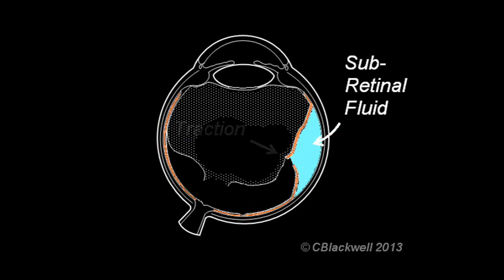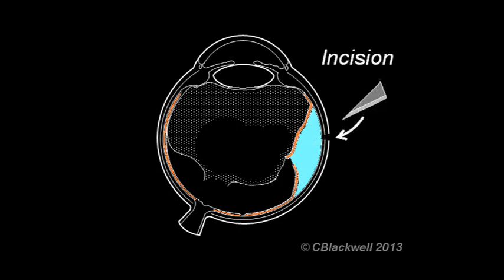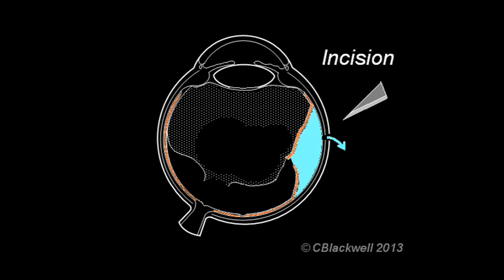Step one is to get rid of the subretinal fluid. Approaching from the outside of the eye, it involves making an incision through the wall of the eye to reach the subretinal space, allowing the fluid to drain. The pointy item is meant to be a scalpel.